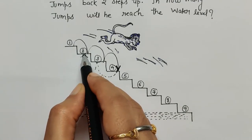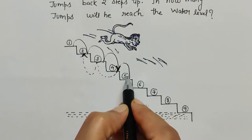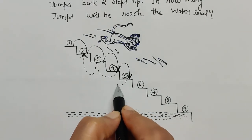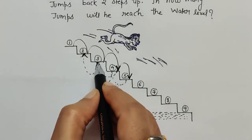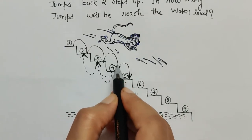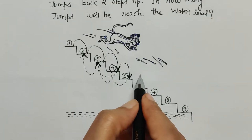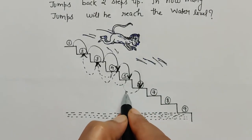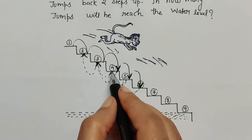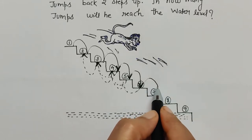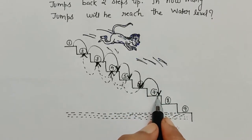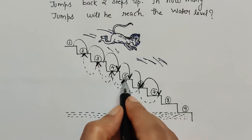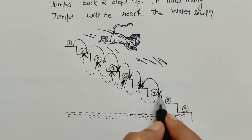Again from here, the monkey moves three steps down — one, two, three — this arrow is counted. Then it goes upward two steps — one, two. Again from here three steps downward — one, two, three — arrow noted. Then upward two steps — one, two. Again three steps downward — one, two, three — then the monkey moves upward by two steps — one, two.